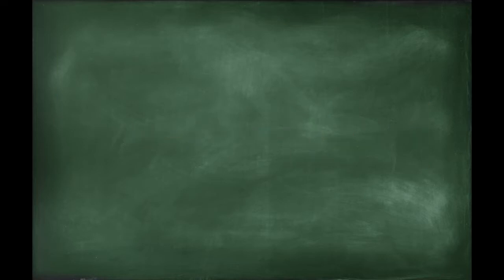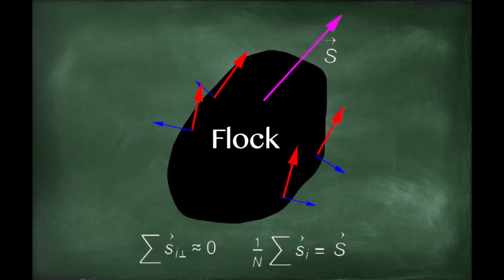Because a flock generally moves in a single direction, we can say that it's polarized. This means that all the perpendicular components of each bird's SI vector cancel out when summed over the flock.